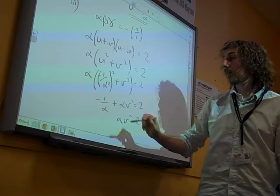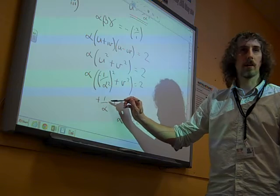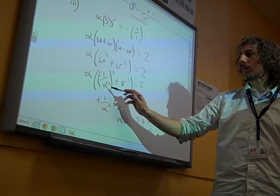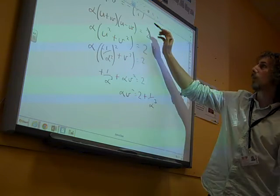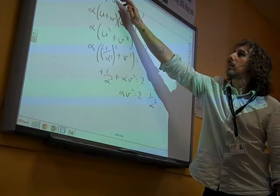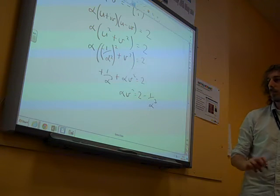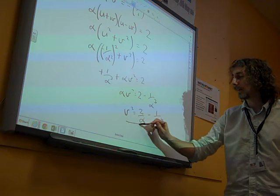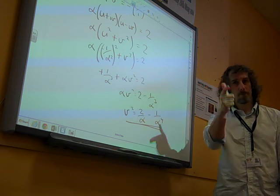So we get minus 1 over alpha cubed plus alpha v squared equals 2. That gives us alpha v squared is 2 plus 1 over alpha cubed. Actually that gives us a plus 1 over alpha cubed. So this is 2 plus 1 over alpha cubed. And now we just need to divide by alpha: v squared is 2 over alpha plus 1 over alpha to the 4. And that is that. And that's maths.